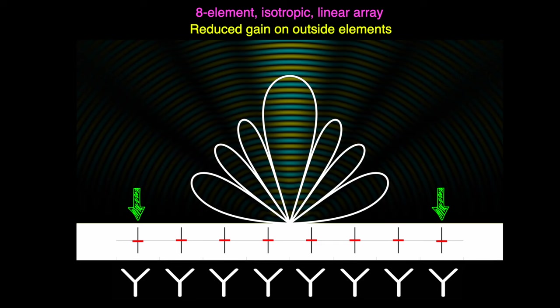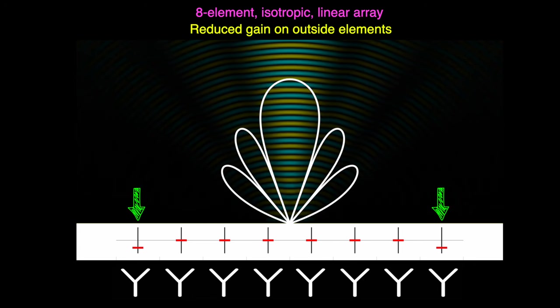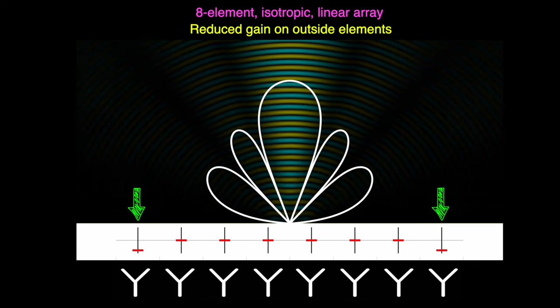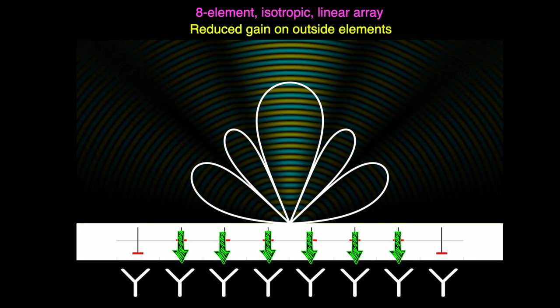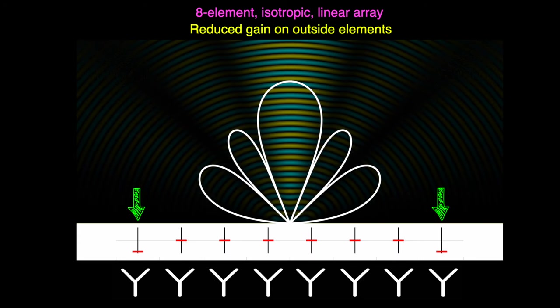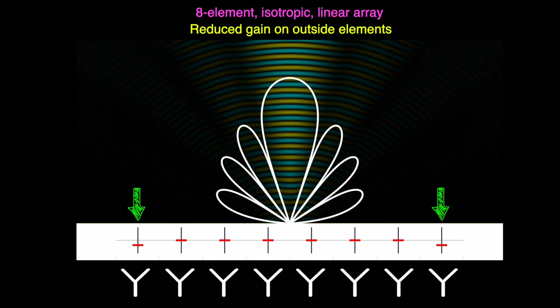So, watch what happens when I lower the gain to just the two outside elements. Notice that the pattern changes. The two lowest side lobes get smaller, and then eventually disappear. In fact, by taking the power all the way down to zero like this, then we're just really left with a six element array. And then by bringing the power back up, we are slowly transitioning back to an eight element array with uniform gain.